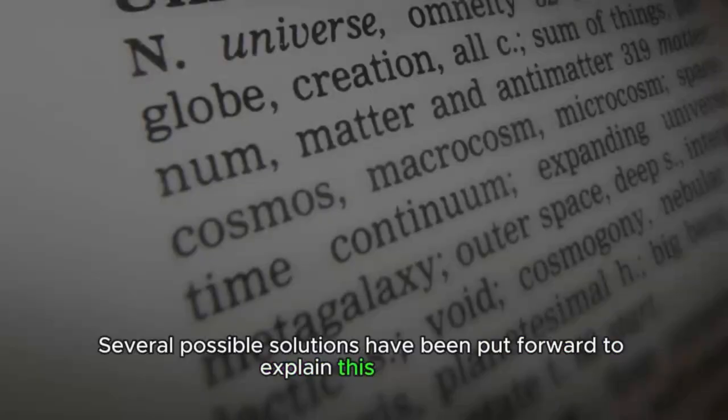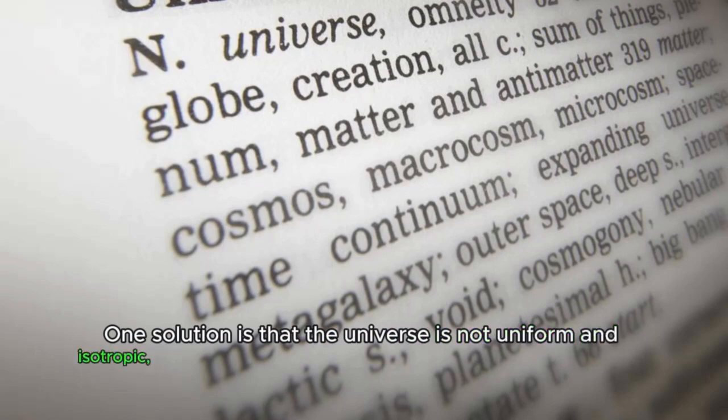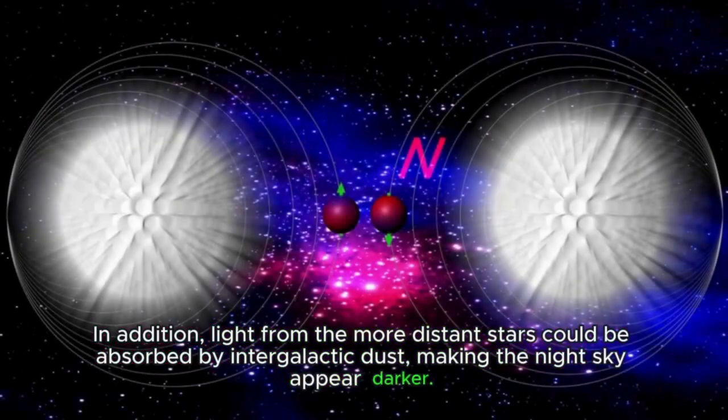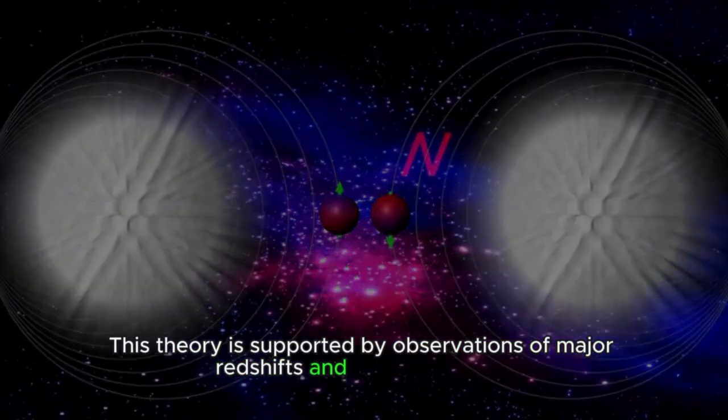Several possible solutions have been put forward to explain this mystery. One solution is that the universe is not uniform and isotropic, meaning that the stars are not evenly distributed throughout space. This could be due to the presence of large-scale structures, such as galaxy clusters and voids, that would create dark patches in the night sky. In addition, light from the more distant stars could be absorbed by intergalactic dust, making the night sky appear darker. This theory is supported by observations of major redshifts and distant quasars.